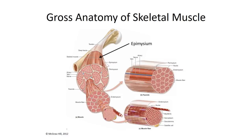The outer layer is epimysium. It's formed by dense, irregular connective tissue and serves as the outer packaging for the entire muscle. At various points, the epimysium invaginates into the muscle belly as the second layer of connective tissue known as the perimysium. This tends to divide the belly up into subsections known as fascicles. If we think about a cut of steak again, the perimysium is responsible for the marbleization we see in certain cuts.